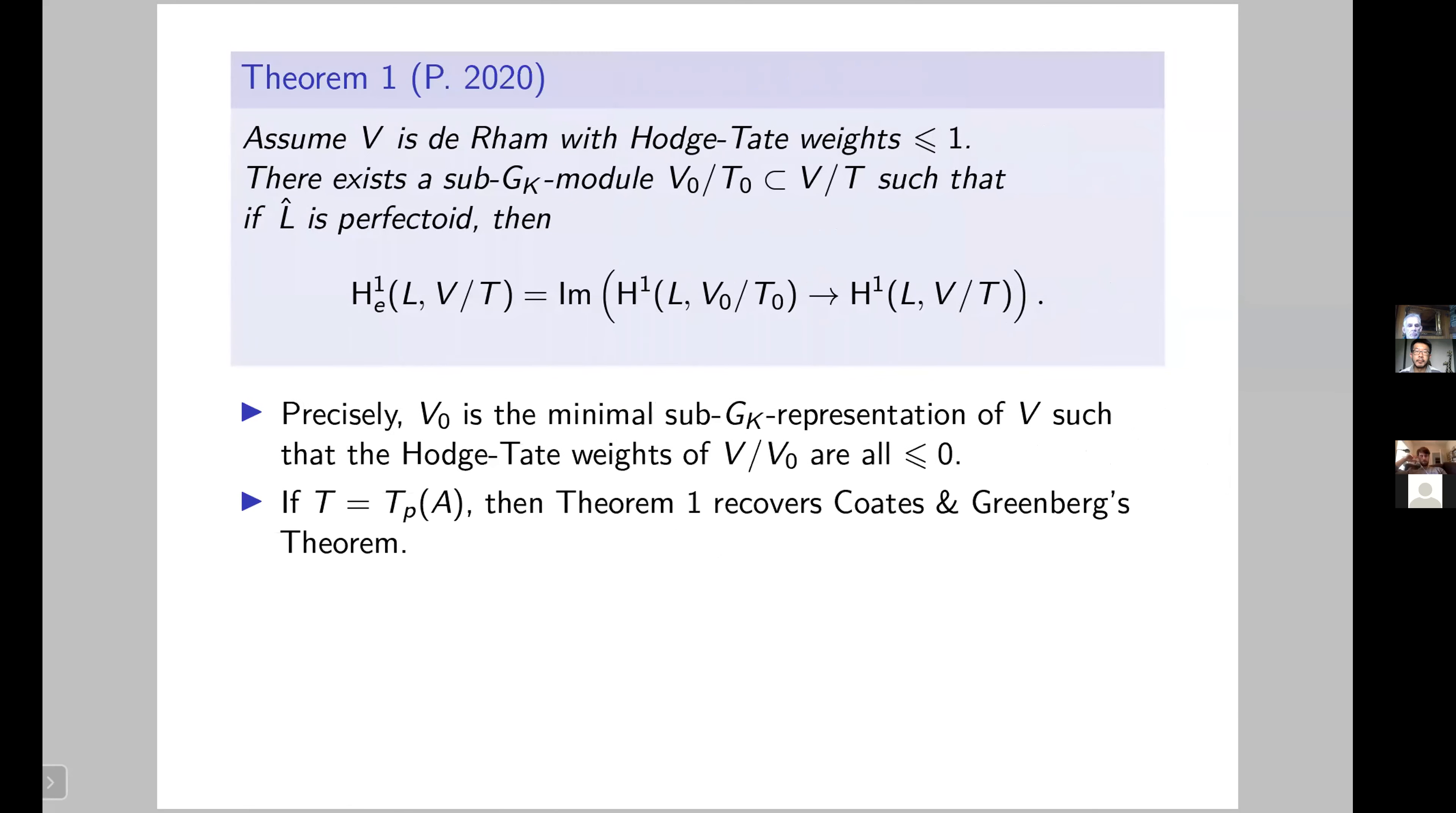A few words about that. For people that know about p-adic representations, this V_0 is defined as the minimal sub-Galois representation of V such that the Hodge-Tate weights of the quotient are all less or equal than zero. And again, to insist on that, if you take T to be the Tate module of an Abelian variety, then this theorem one gives you back Coates and Greenberg's result. But this theorem one still treats new cases of this question of Coates and Greenberg, and in particular it's for p-adic representations, it finally goes beyond the cyclotomic case.